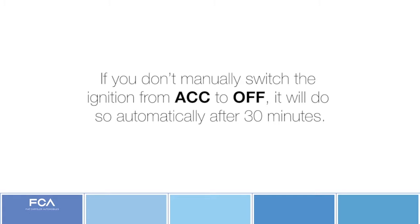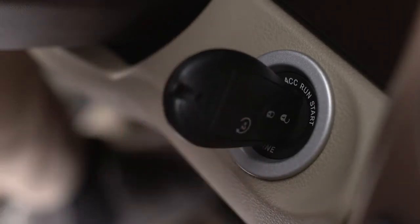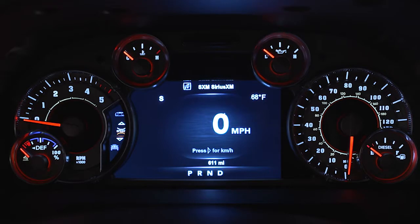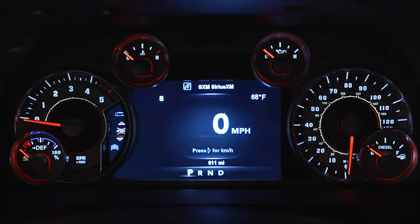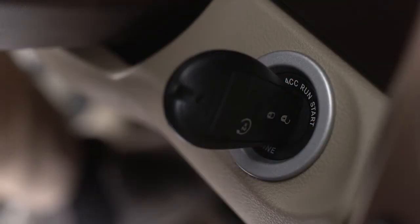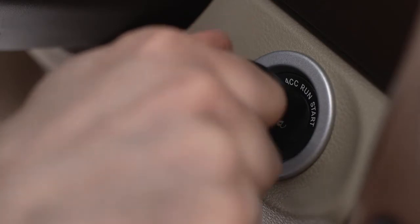If you try to turn the engine off with the key fob ignition switch and the vehicle is not in park, the engine will turn off and the ignition will switch to accessory, or ACC, mode. Auto park will engage and automatically shift into park once your speed is below one mile per hour. To remove the key fob from the ignition switch, you must manually turn it from ACC to run, then to off.